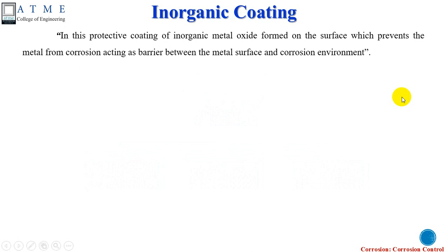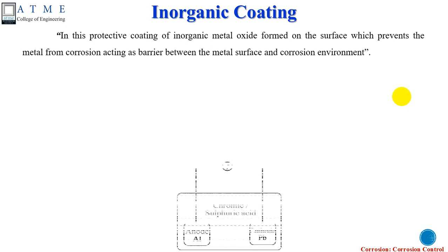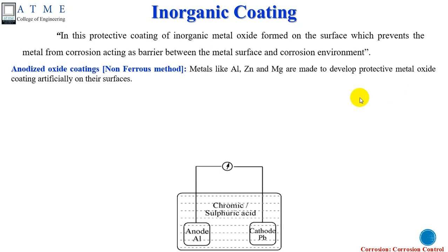Inorganic coating is a process where a base material — the metal which has to be protected from corrosion — is coated with an inorganic oxide on the entire surface of the metal. The inorganic oxide acts as a protective barrier, and this protective barrier avoids further corrosion of that particular metal. An example is the anodized oxide method.